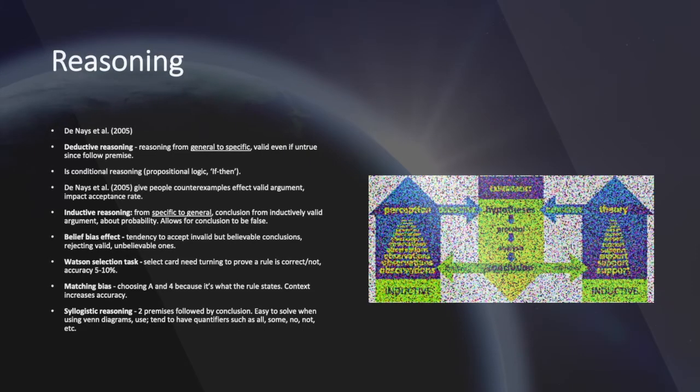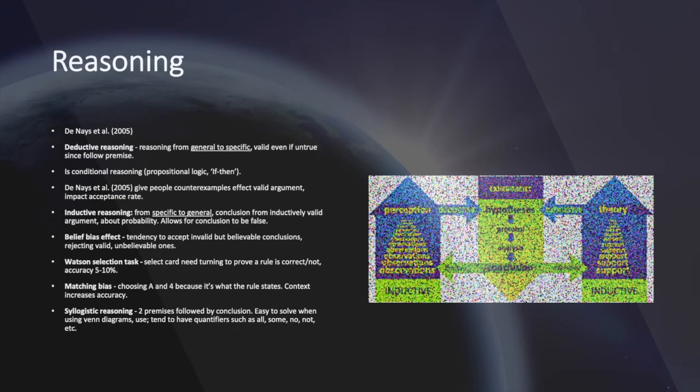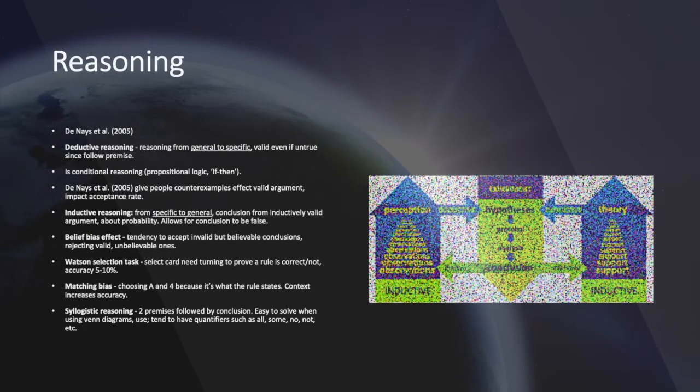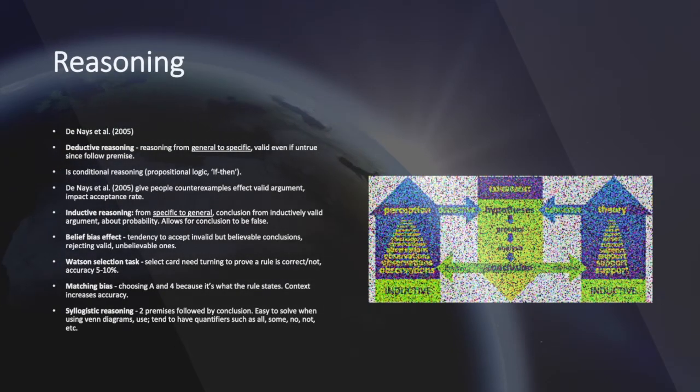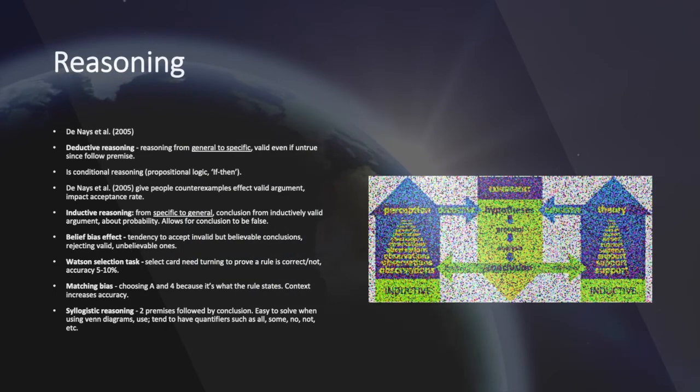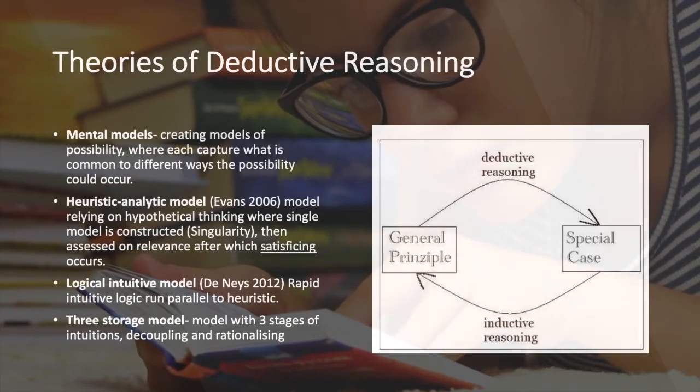Syllogistic reasoning is where there are two premises followed by a conclusion. It's easy to solve when using a Venn diagram since individuals are able to see how the quantifiers work, such as all, some, no, or not. Mental models are the creation of models of possibility where each captures what is common to different ways the possibility could occur.